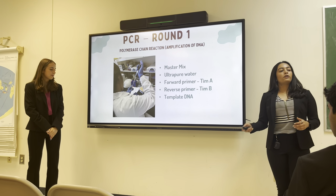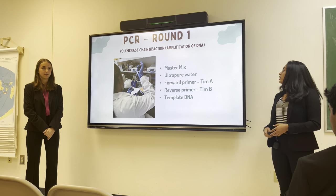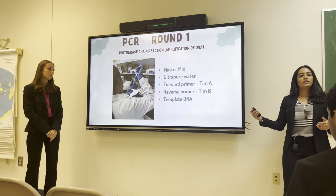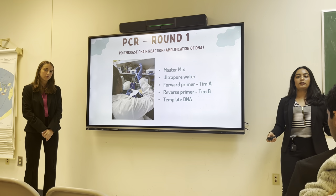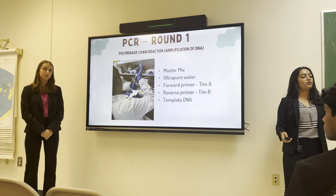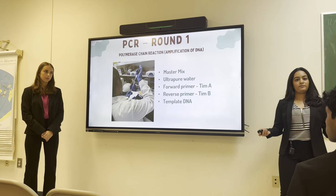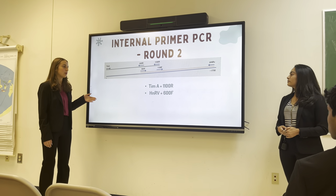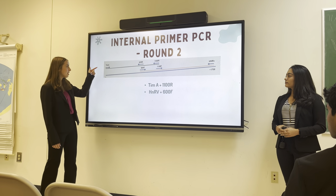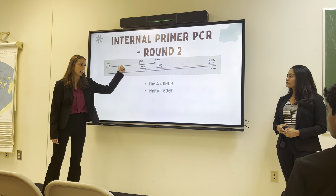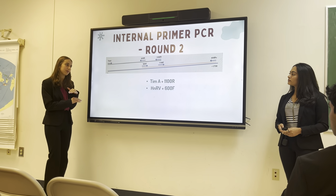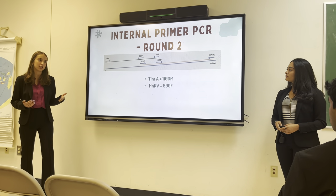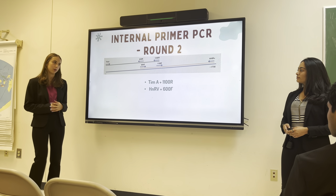Our next step was running PCR, or polymerase chain reaction. We would initially run it with primers TIM-A and TIM-B. This would allow us to isolate the 18S ribosomal sequence, which is what we would use to compare the flatworms as well as the prey. Then we would run a second round of PCR, using a forward primer such as TIM-A and a reverse primer 1100R, followed by HNR-V and 600F, to make sure that we sequenced what we wanted from the predatory flatworm.